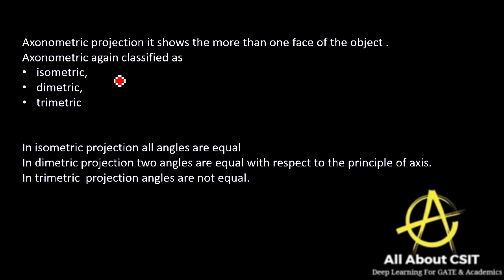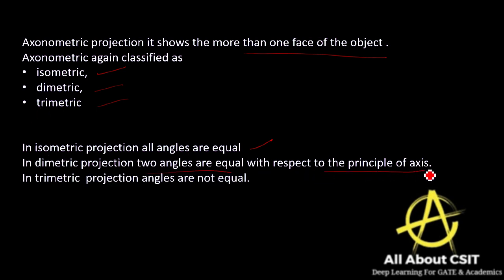In axonometric projection you can see more than one face of the object, unlike multi-view where you see only one face at a time. Axonometric is further classified into isometric, diametric, and trimetric. In isometric projection all angles are equal, letting you see more than one face. In diametric projection two angles are equal with respect to the principal axis. In trimetric projection angles are not equal, but you can still see part of another side.